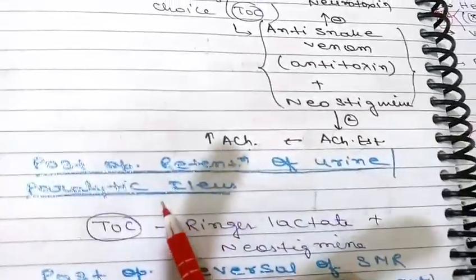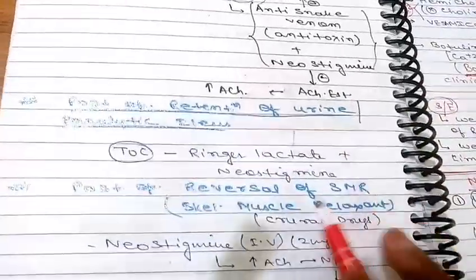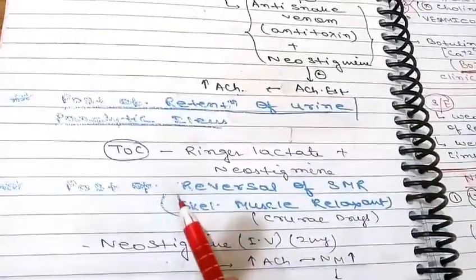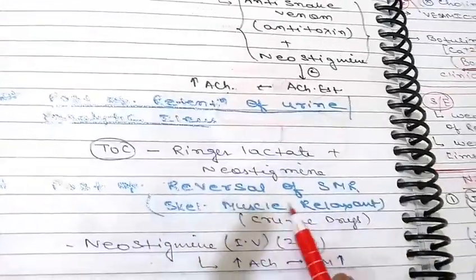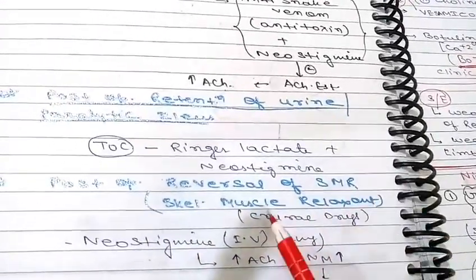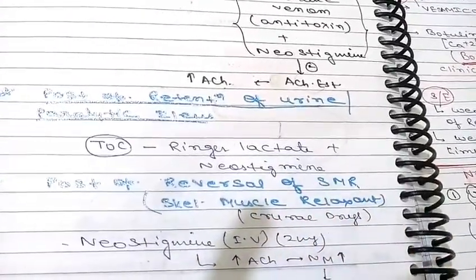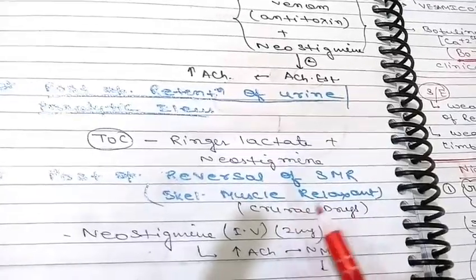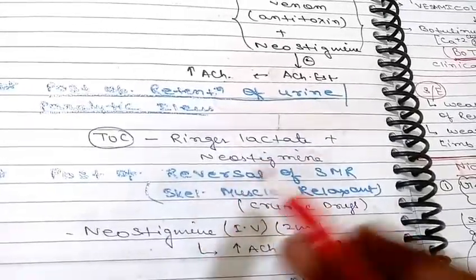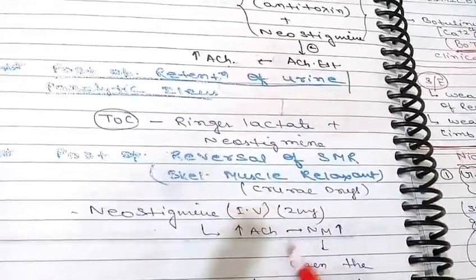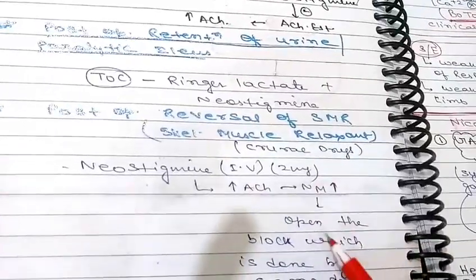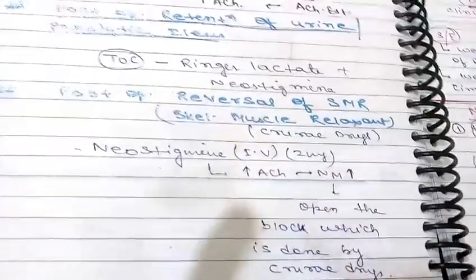Post-operative retention of urine and paralytic ileus can also be treated with neostigmine plus Ringer lactate solution. There is also post-operative reversal of skeletal muscle relaxants — for skeletal muscle relaxation we use curare; post-operatively, neostigmine is used to increase acetylcholine at NM receptors to reverse the block caused by curare. This is all about the cholinergic system and drugs.